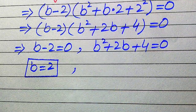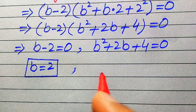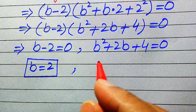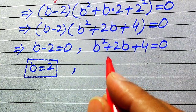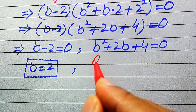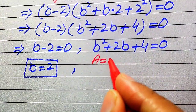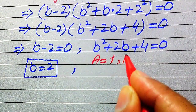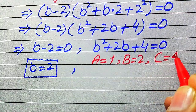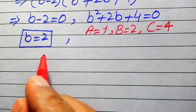There are three methods to solve the quadratic equation: factorization, completing the square, and the quadratic formula. Here we use the quadratic formula. First we need to write the coefficients of this equation: a equals 1, capital B equals 2, and capital C equals 4.